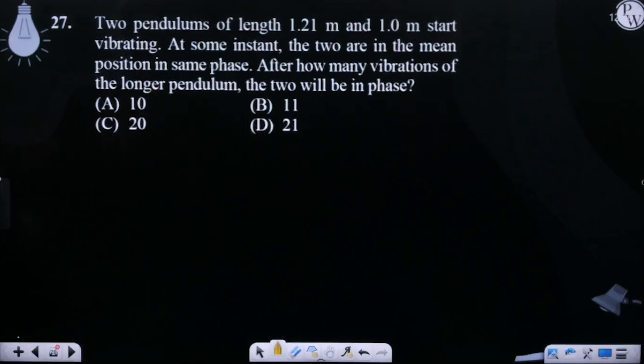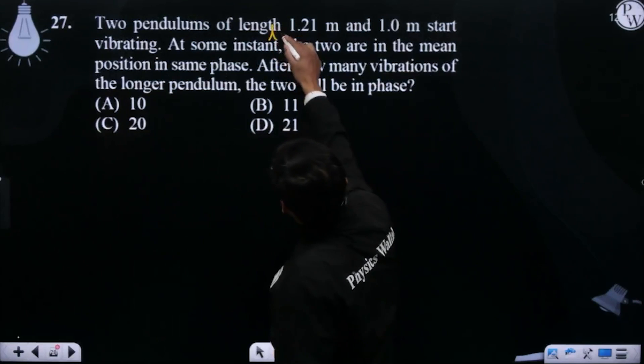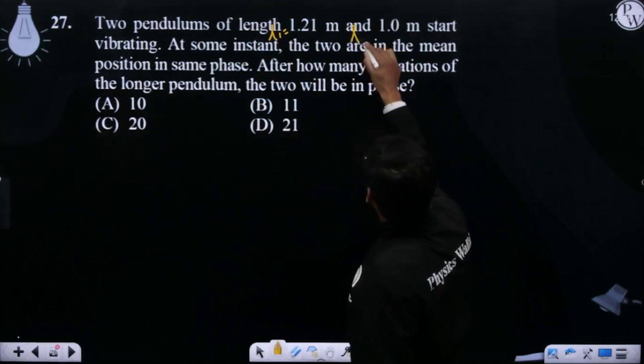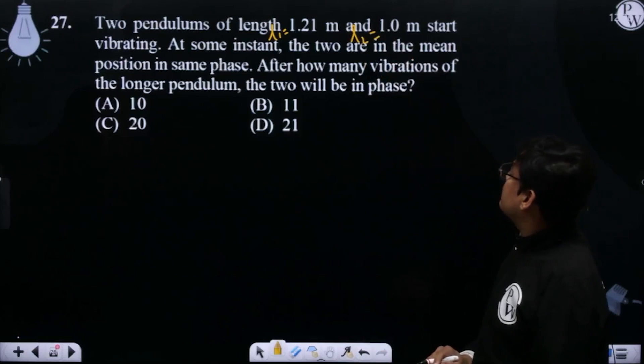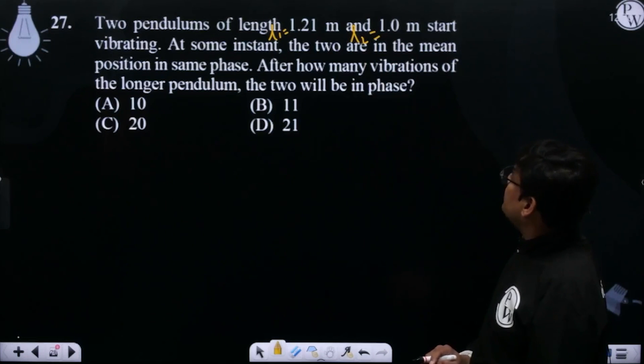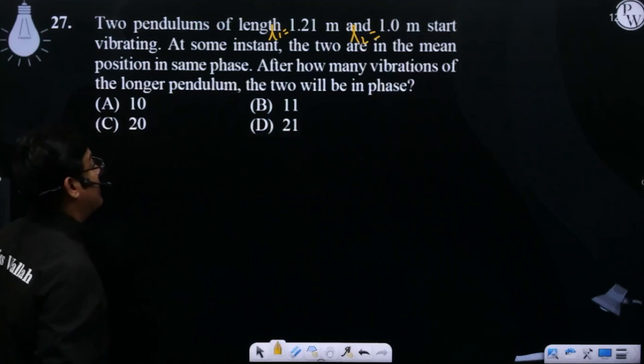Problem number 27: Two pendulums of length 1.21 meters and 1.0 meter start vibrating. At some instant, the two are in the mean position in same phase. After how many vibrations of the longer pendulum will the two be in phase?